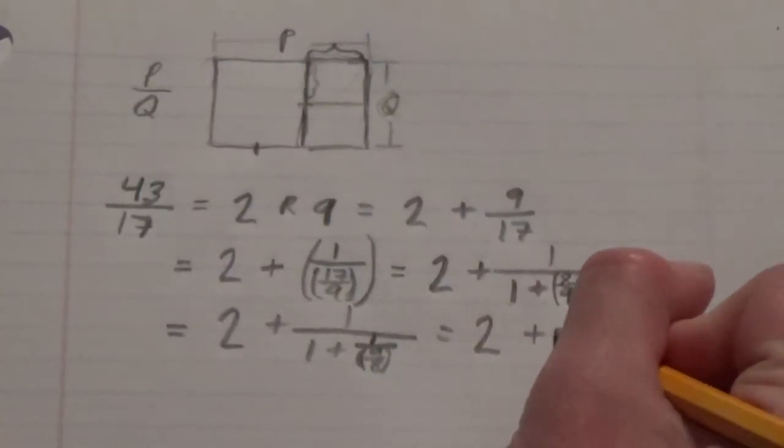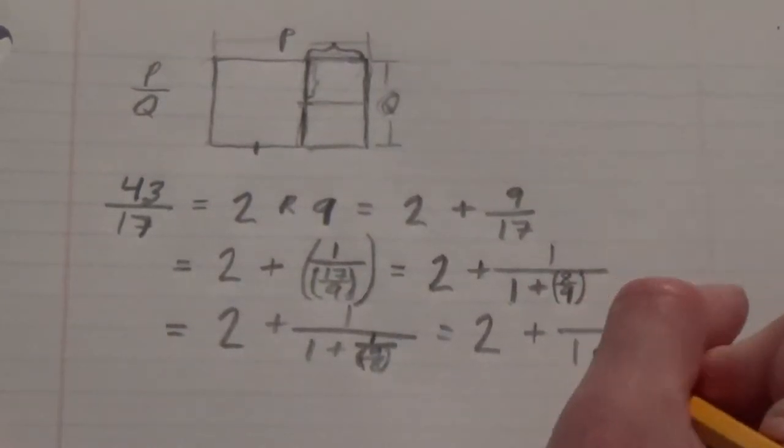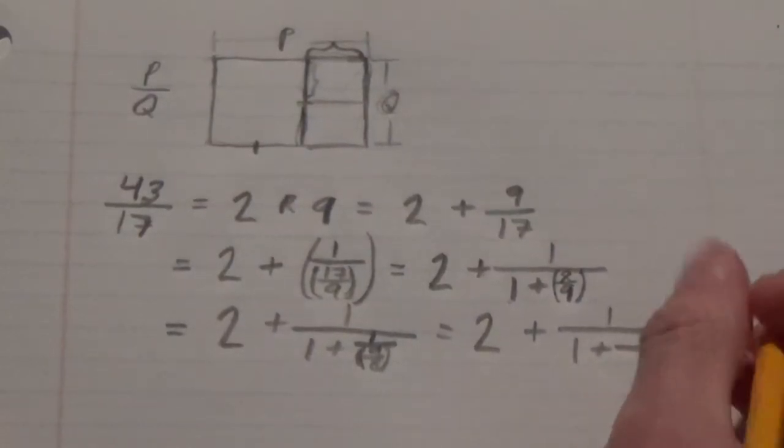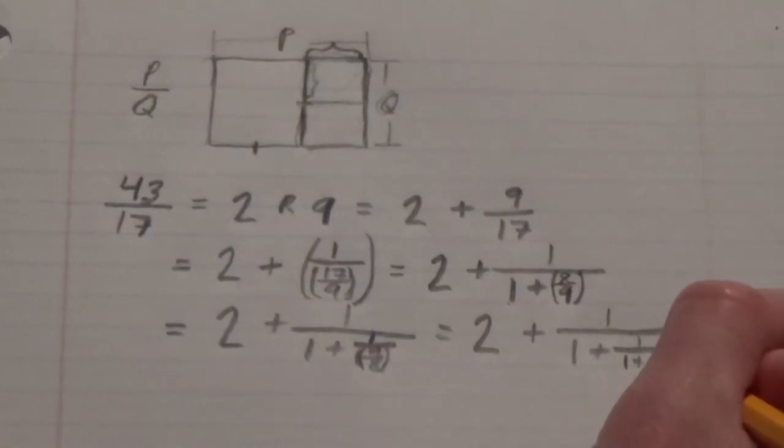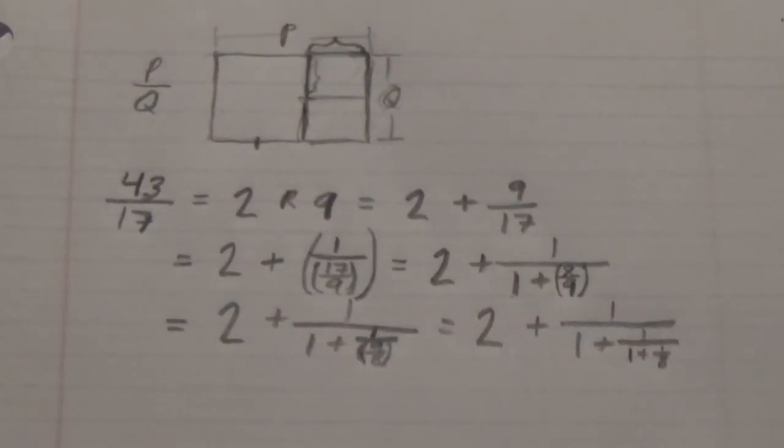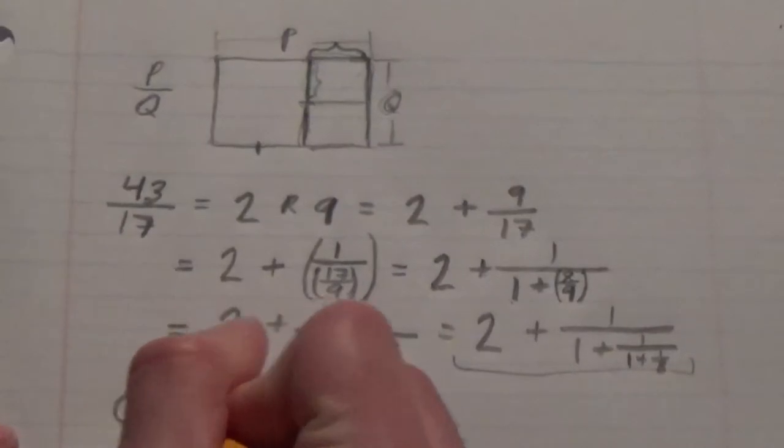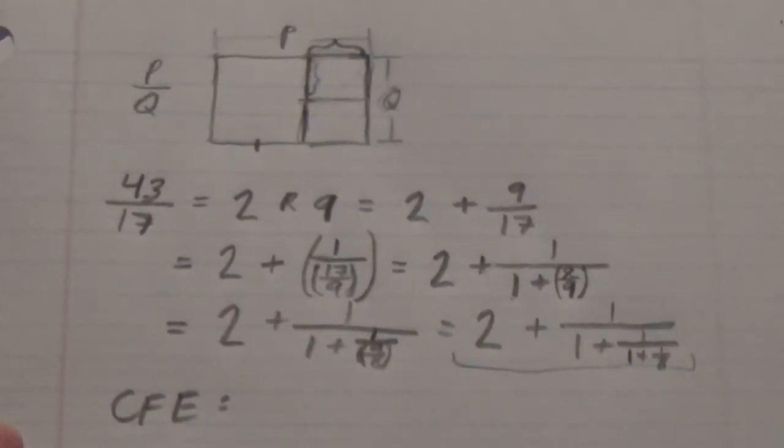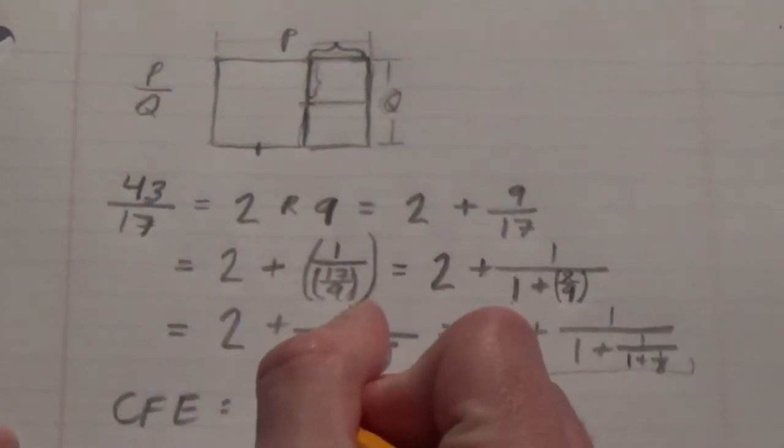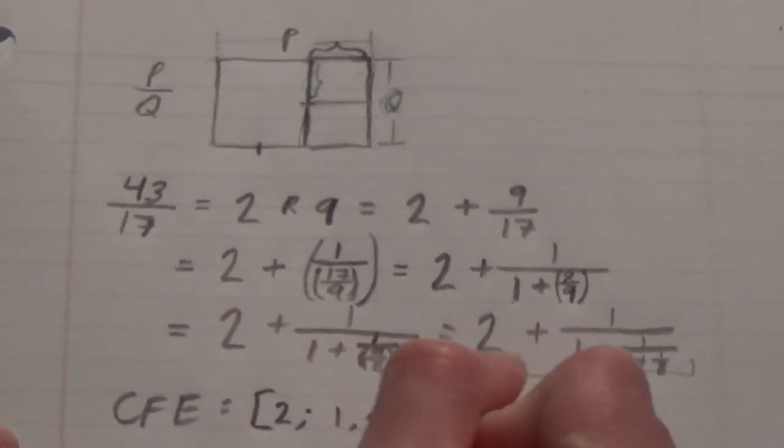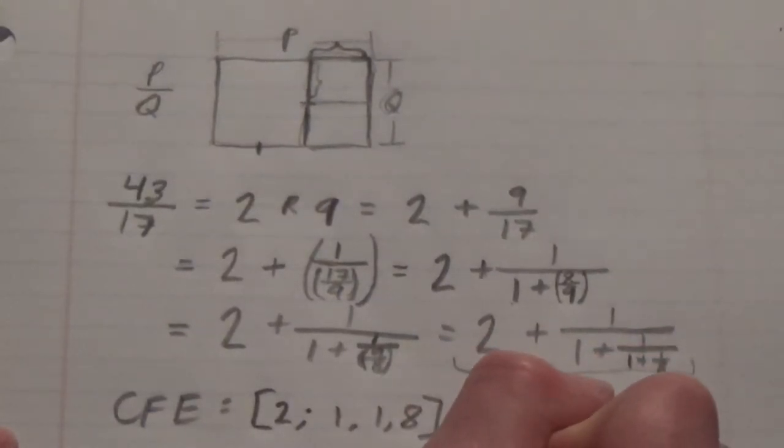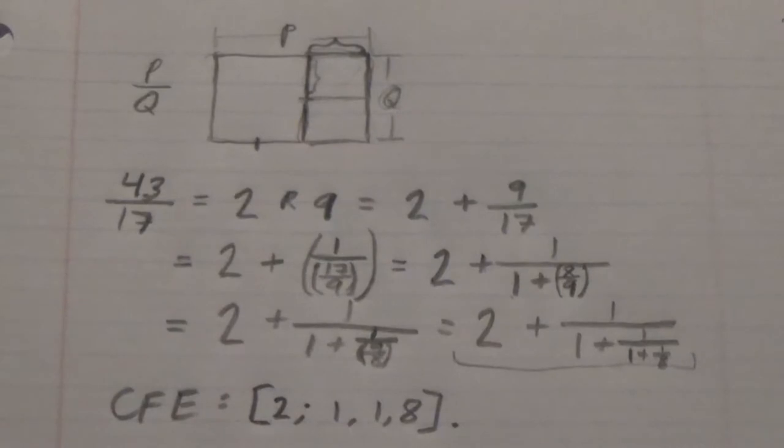So it's 1 over 9 eighths in the denominator. Then we can keep going and rewrite that as 1 over 1 plus 1 over, and here we can say it's clearly 1 plus 1 eighth. It's 9 eighths. Going from here, we can say that the overall CFE, or Continued Fraction Expansion, can be written in the bracket notation as 2 semicolon 1 comma 1 comma 8.